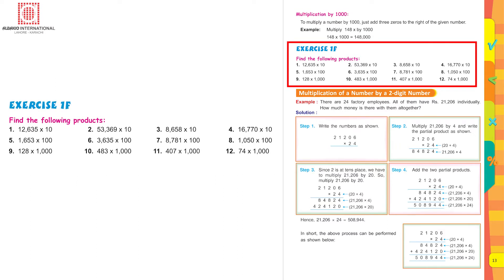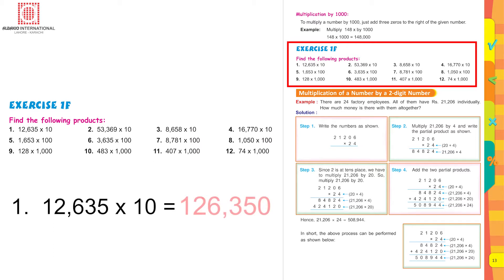Exercise 1F: find the following products. Twelve thousand six hundred and thirty-five multiplied by ten. How many zeros are you going to put on the right side? One zero, because there is one zero in ten. This is how you are going to attempt the other questions.